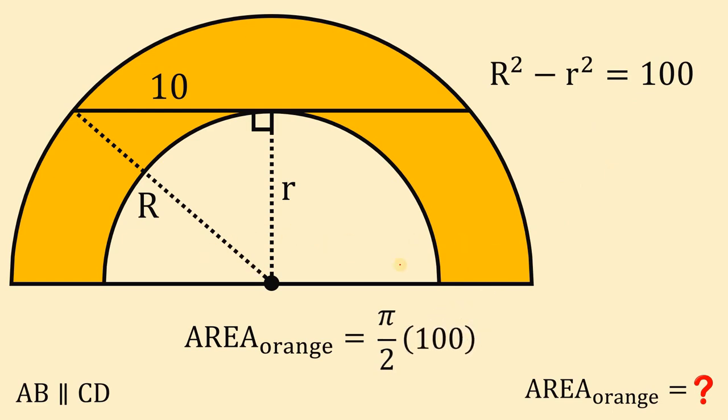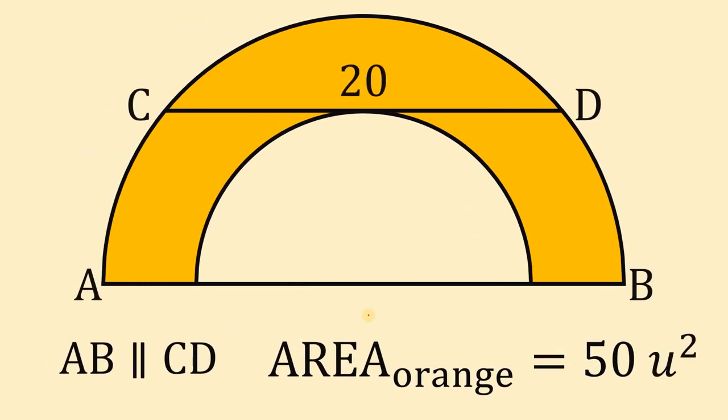Therefore, the area of this orange region equals π over 2 multiplied by 100, which gives us an answer of 50π. Our answer to this question: given this figure, the area of the region shaded in orange equals 50π square units. And as always, we are done.